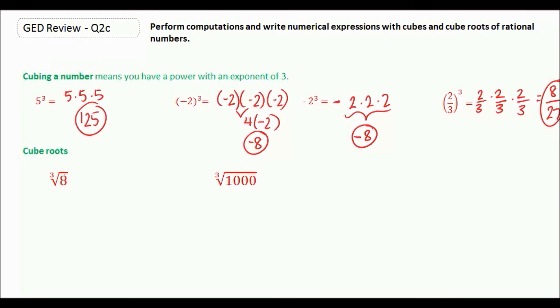So here we want to find a number that when you multiply it by itself again, and then again one more time, it gives you 8. Well, 2 times 2 would be 4, and times 2 again would be 8. So the cube root of 8 is 2.